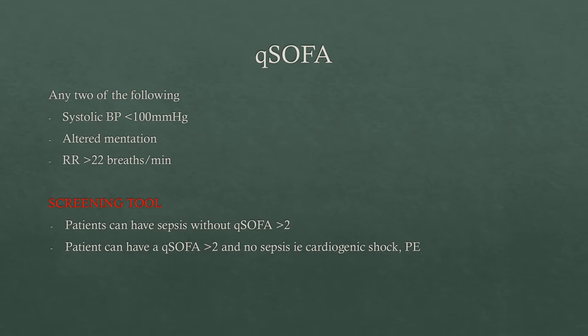What we tend to look at more is the qSOFA score, which is a screening tool. It looks at just three things: systolic blood pressure less than 100, altered mentation, and a respiratory rate greater than 22. Any two of these should make you think about sepsis. People can have sepsis without a qSOFA score of two or more, and patients can also have a qSOFA of two or more without having sepsis — for example, other types of shock like cardiogenic shock or PE.